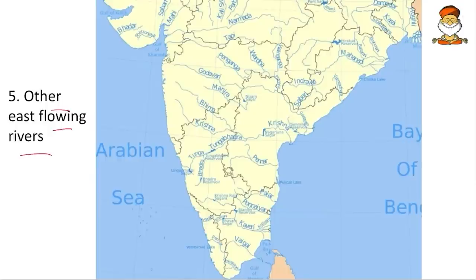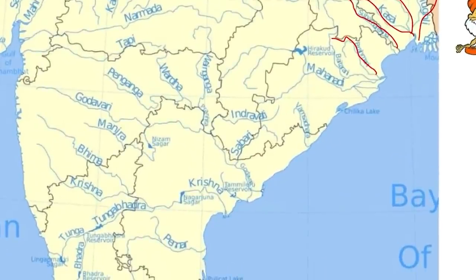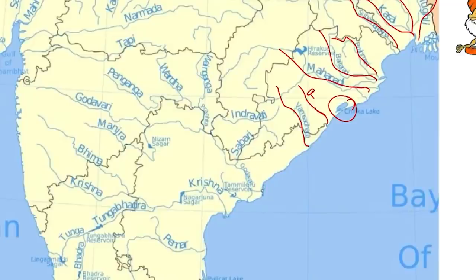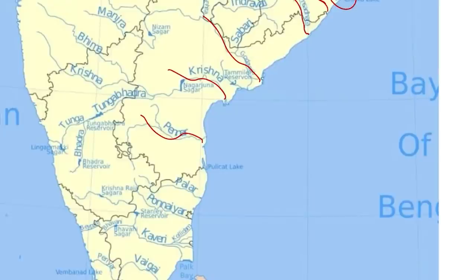For other east-flowing rivers: give first importance to map books — every year 4 to 5 questions appear from maps, giving 8 to 10 marks. From north to south: Hooghly, Damodar, Kasai, Subarnarekha, Brahmani, Baitarani, Mahanadi — then Chilika Lake between Mahanadi and Rishikulya. Also mark Rushikulya river above it. Then Godavari, Krishna, Pennar (Penneru), Palar, and Ponnayar — Ponnayar and Pennar are different rivers.